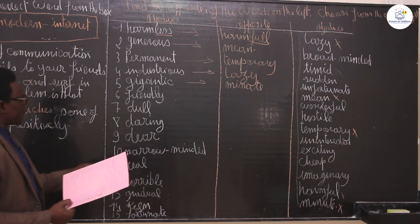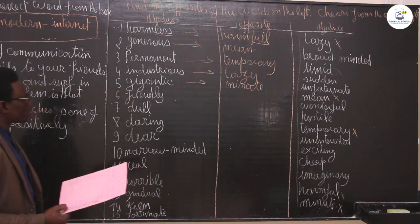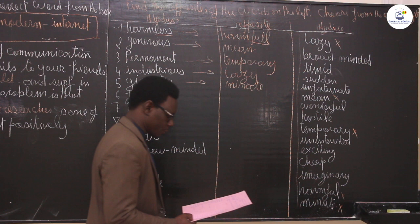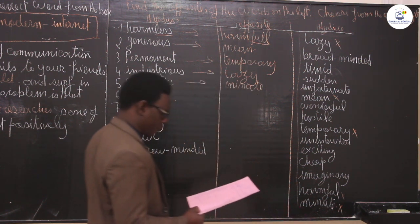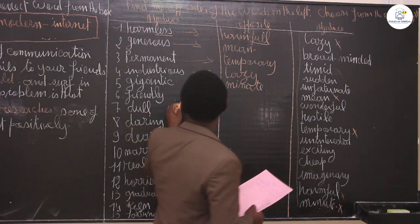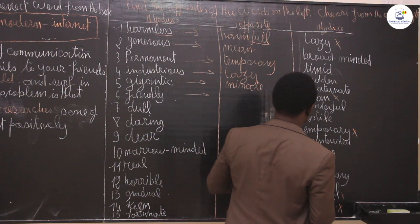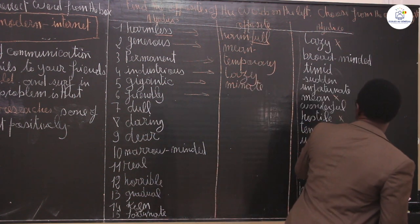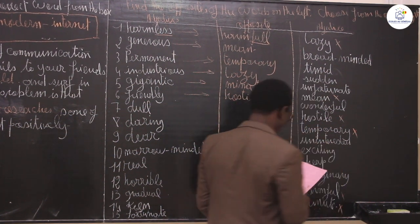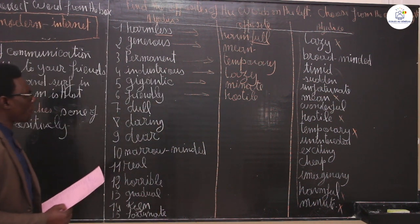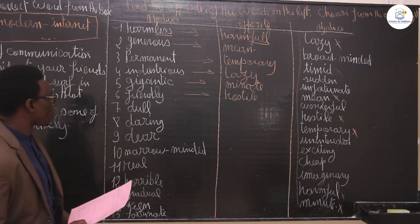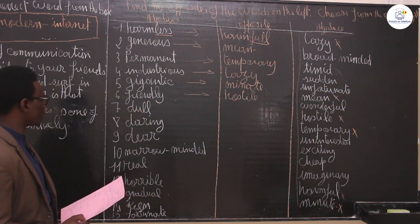You have the word friendly. What is the opposite of friendly in the text? The opposite of friendly is, of course, hostile. Hostile is the antonym of friendly.